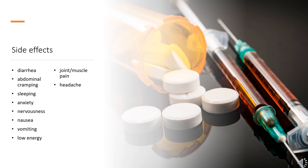Side Effects. The most common side effects reported with naltrexone are gastrointestinal complaints such as diarrhea and abdominal cramping. These adverse effects are analogous to the symptoms of opioid withdrawal, as the mu-opioid receptor blockade will increase gastrointestinal motility. Side effects of naltrexone with greater than 10% incidence include: difficulty sleeping, anxiety, nervousness, abdominal pain/cramps, nausea and/or vomiting, low energy, joint/muscle pain, and headache.